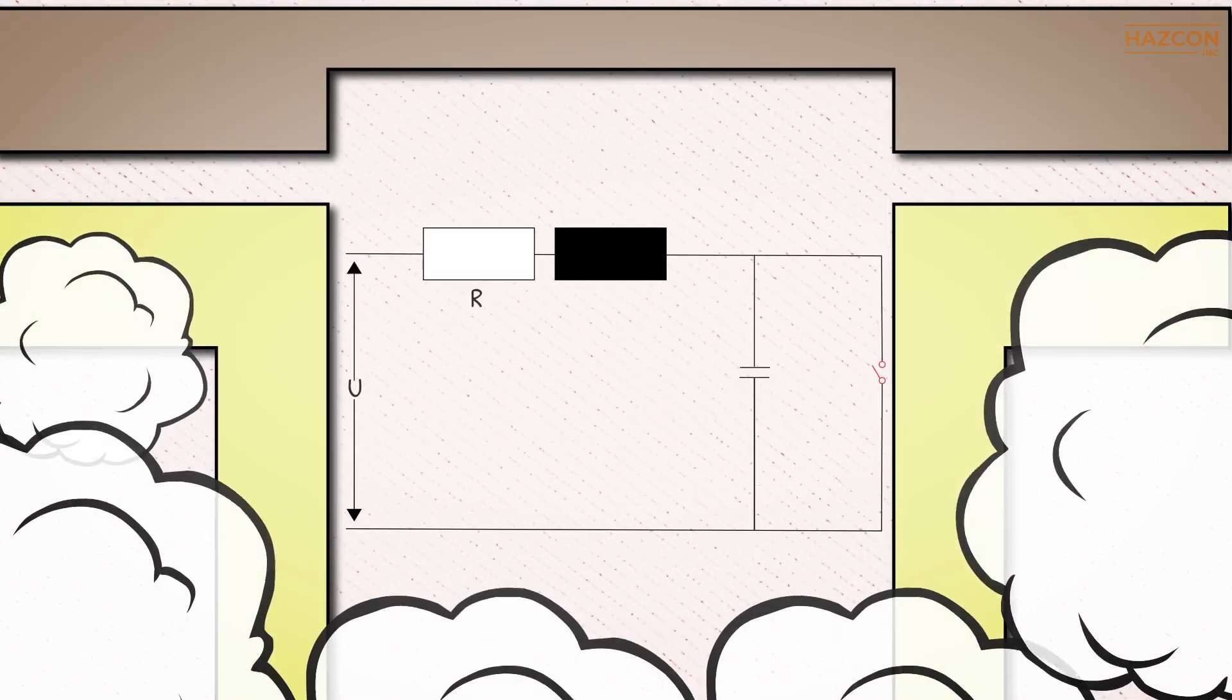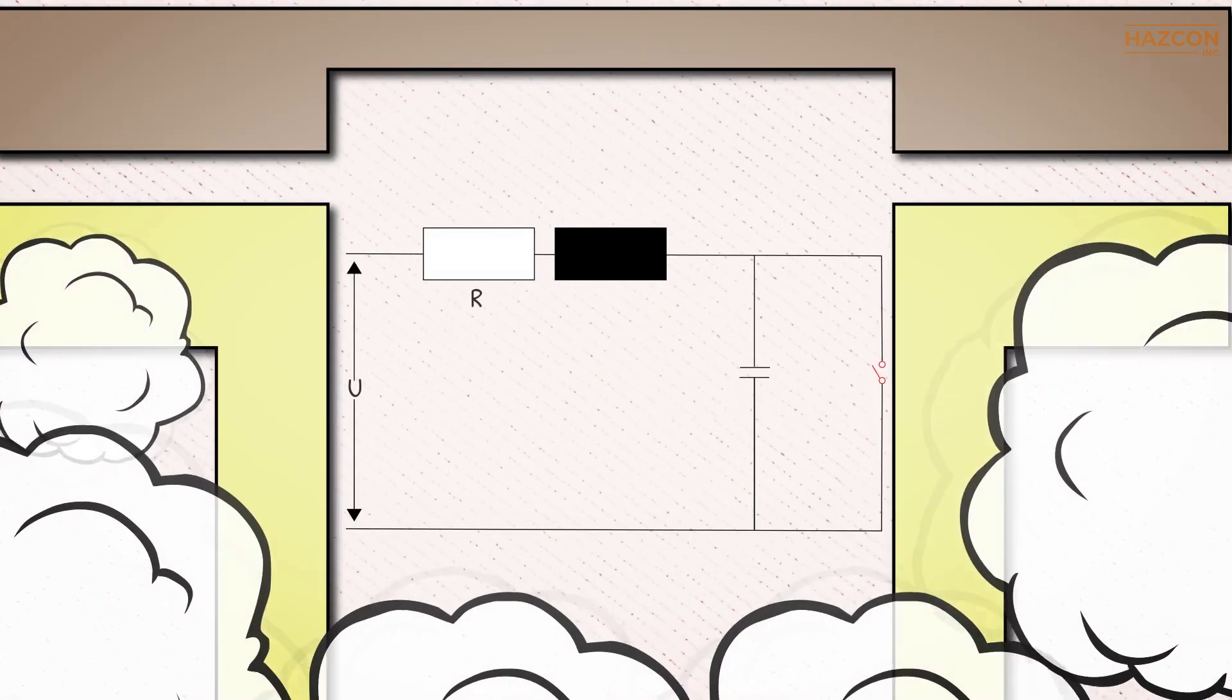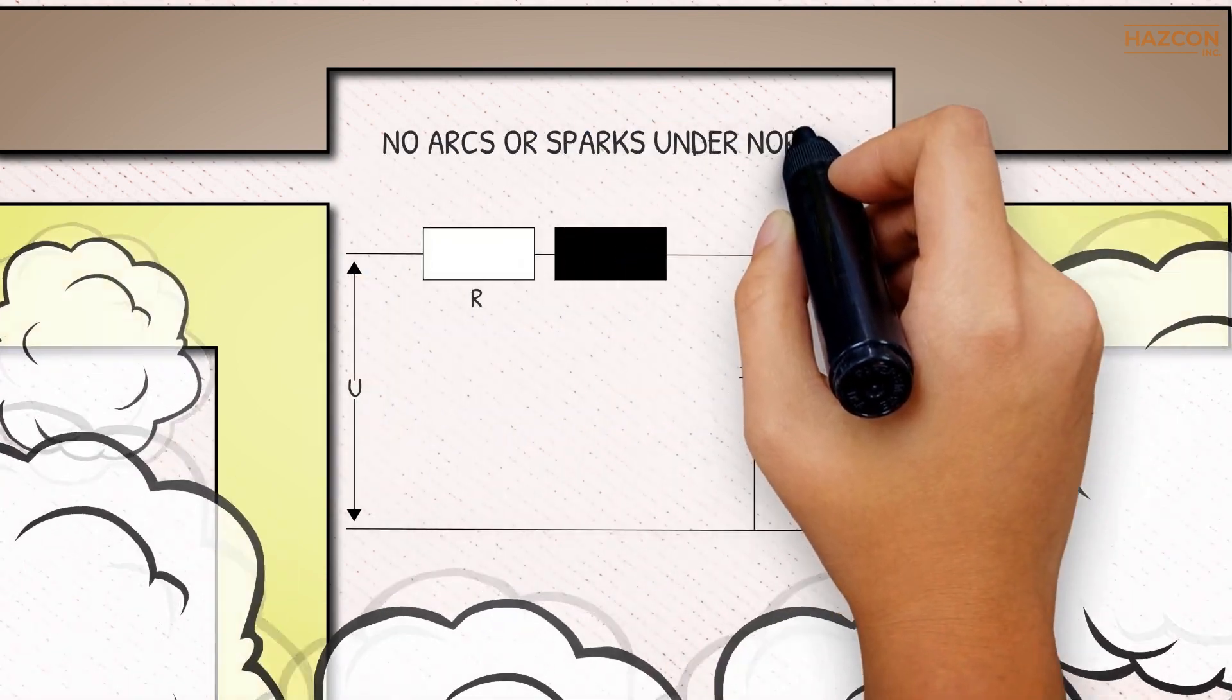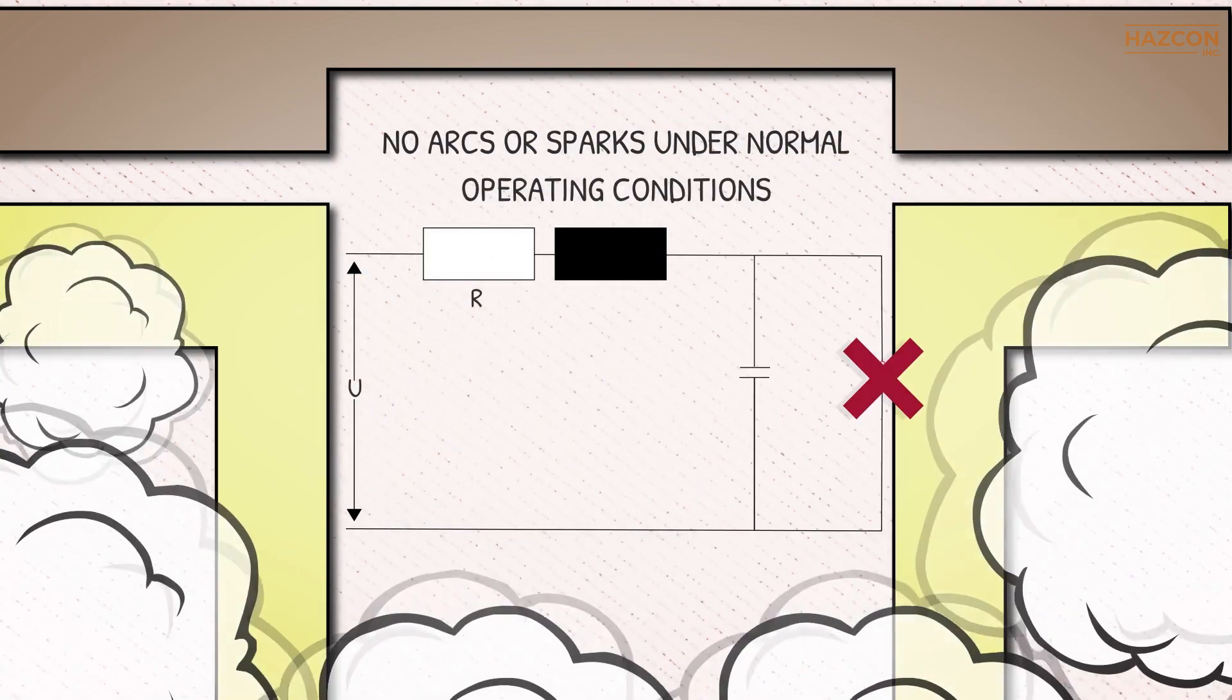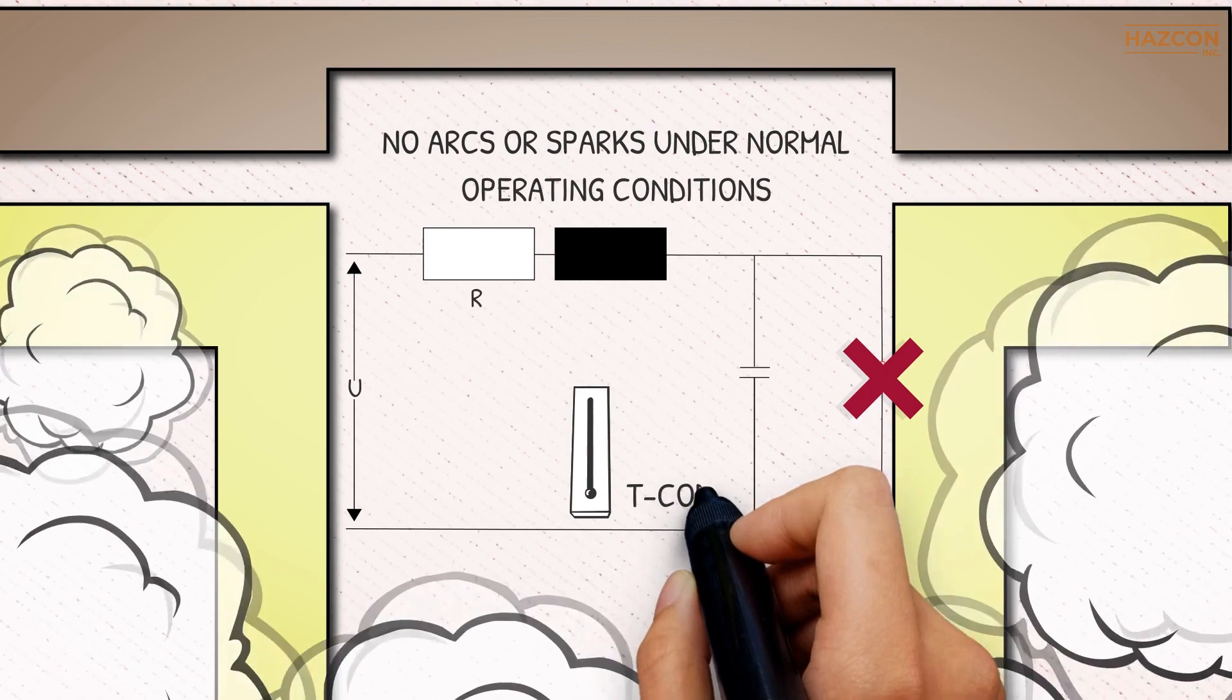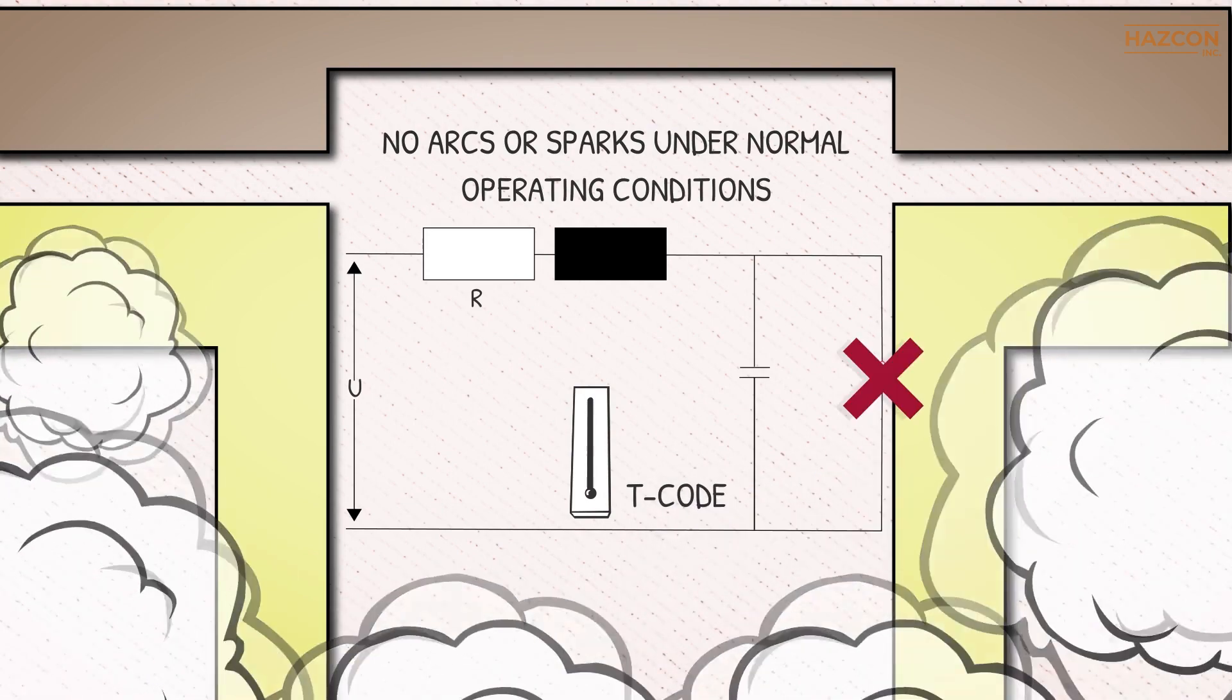Furthermore, the internal electronic circuit must be evaluated properly to ensure that there can be no arcs or sparks under normal operating conditions, and their surface temperature rise is below the T code assigned to the equipment.